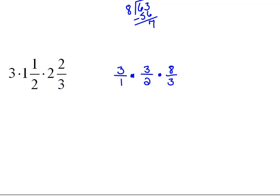Now, we can simplify, actually, before we move on. We have 3 will go into 3 once and 3 will go into 3 once. We also have 2 and 8 that we can simplify. 2 goes into 2 once and 2 goes into 8 four times. So, now we're multiplying 3 times 1, which is 3, times 4, which is 12, over 1 times 1 times 1 is 1. And this is improper. So, 12 divided by 1 is 12. So, that's how we multiply with mixed numbers.